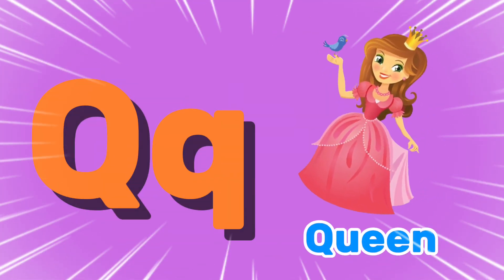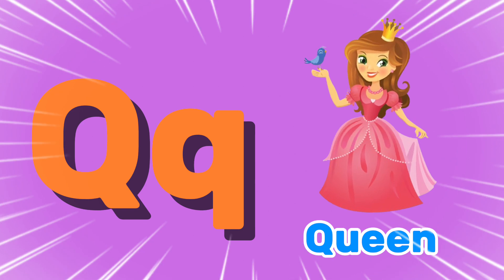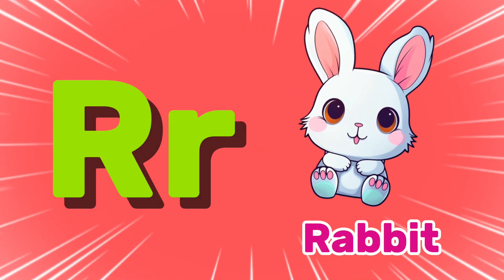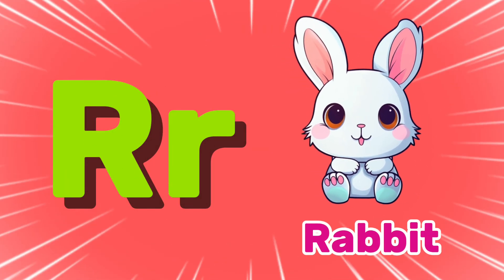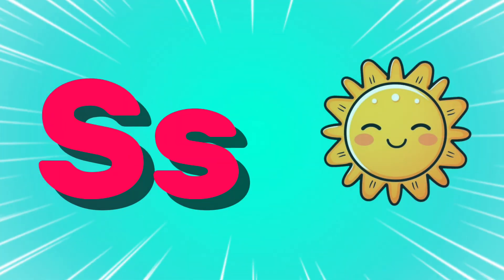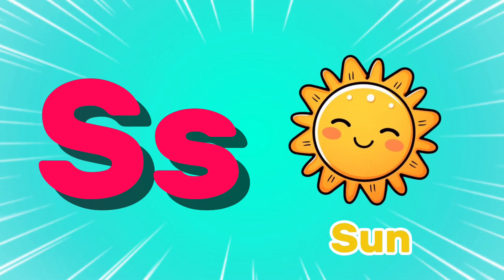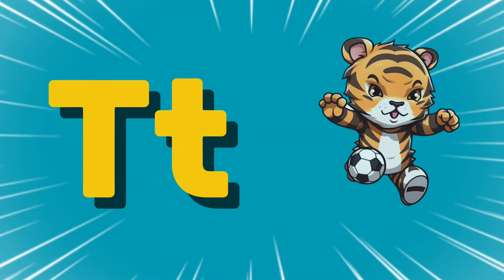Q is for queen. R is for rabbit. S is for sun. T is for tiger.